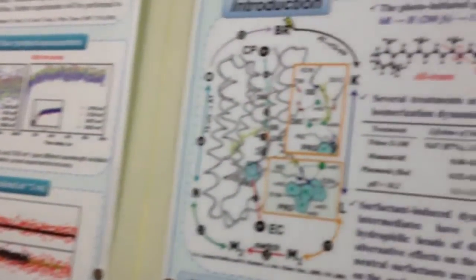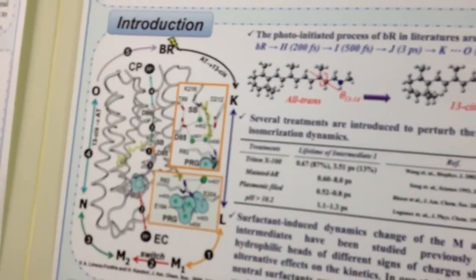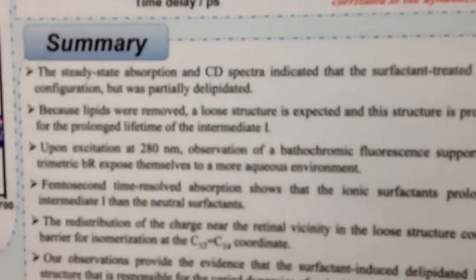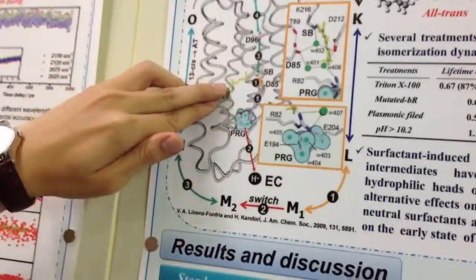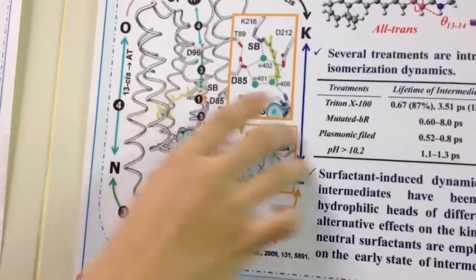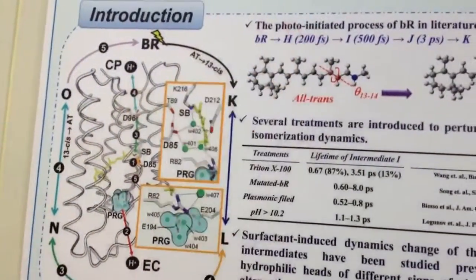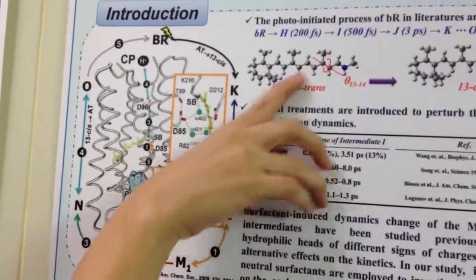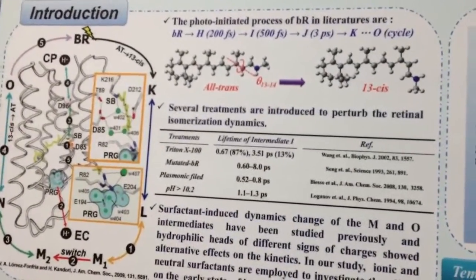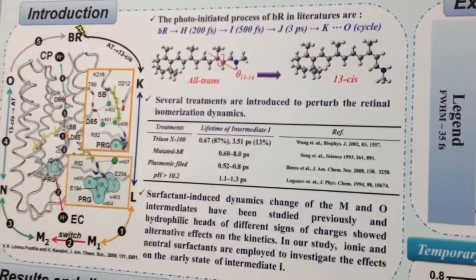We prepare a sample from the bacteria. We purify and get the purple membranes solution. When we initialize — we pump it into the excited states — maybe in a few picoseconds, the trans-isomer will quickly transfer into the cis-isomer. So we use the pump-probe process to monitor this process.